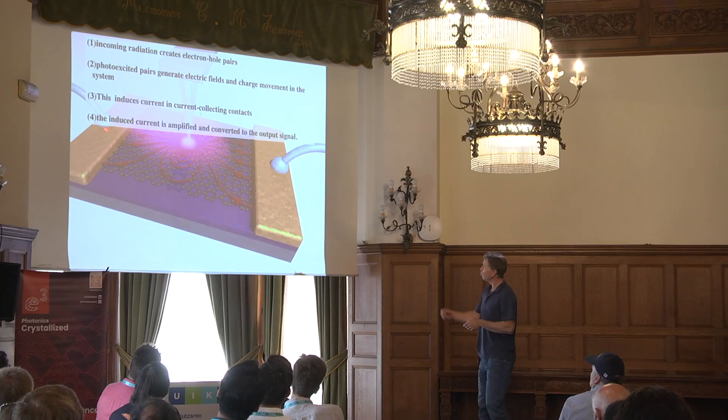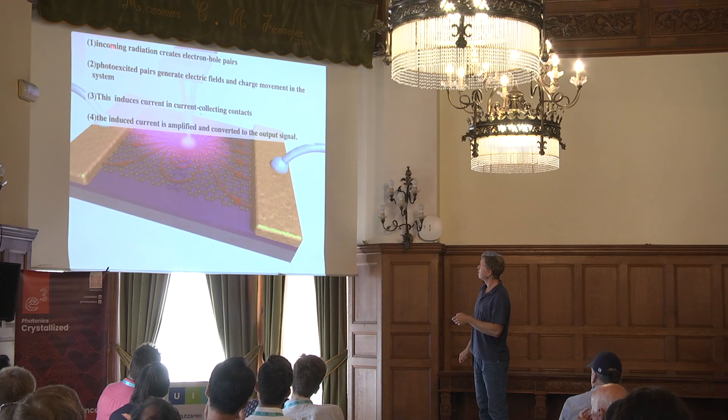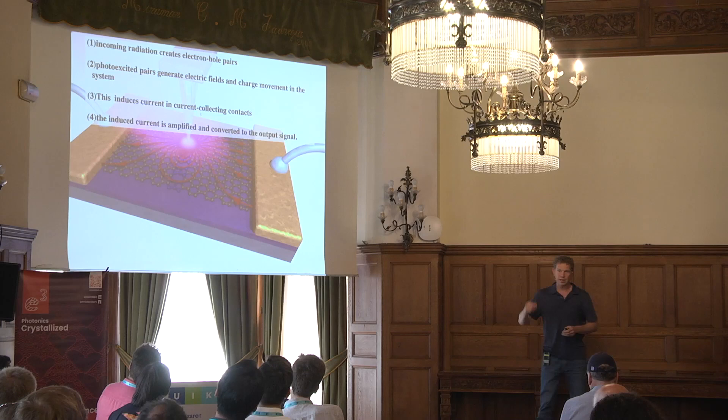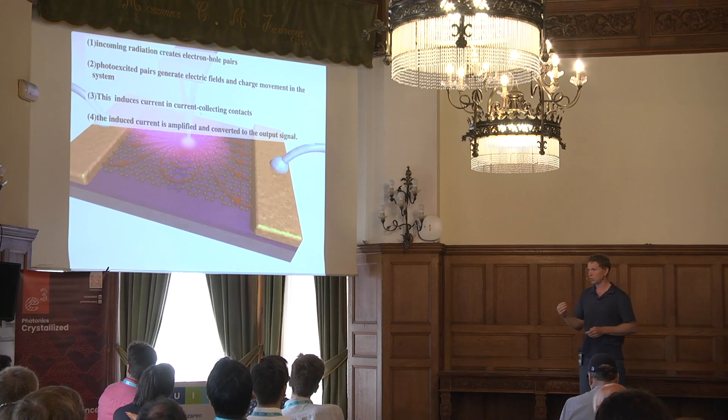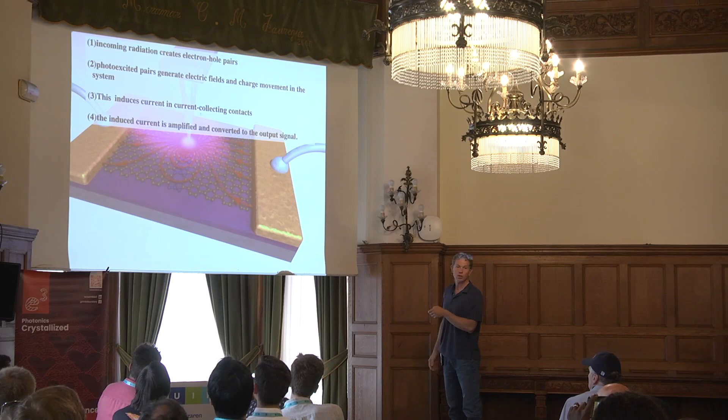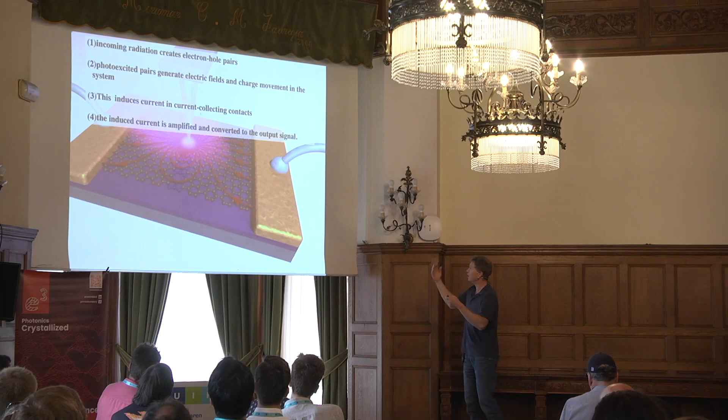What happens is actually four things. First, the incoming radiation generates some excitation — here I put electron-hole pairs, because that's the simplest way a photon can be absorbed. But as we see later, the incoming radiation with a tip can also generate plasmons, polaritons, or heat. It creates some excitation in the system.